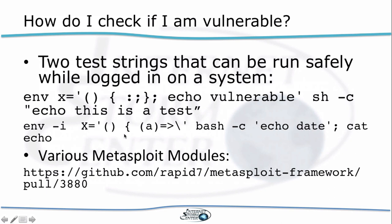You can also log into a system directly and there are two different strings that can be used to check if you're vulnerable. The first one will work only if you have not applied the patch — it will echo back a 'vulnerable' message. The second string exploits the vulnerability even after you have applied the patch. It's a little more tricky: the script creates a file called 'echo' and you check if the current date was written to that file, which shows you're still vulnerable. Many vulnerability scanners have also announced modules for this vulnerability, and there are a couple of modules for Metasploit now.